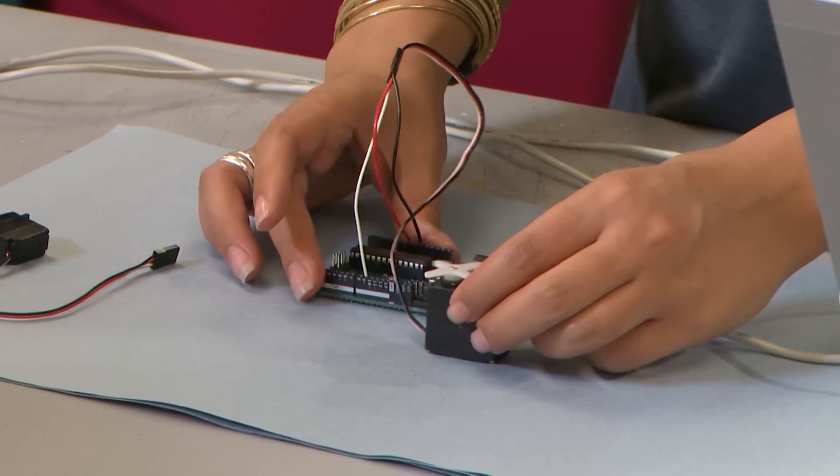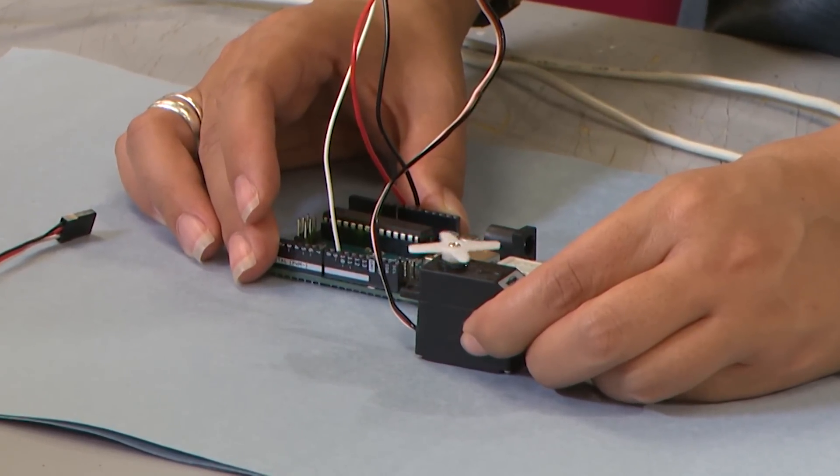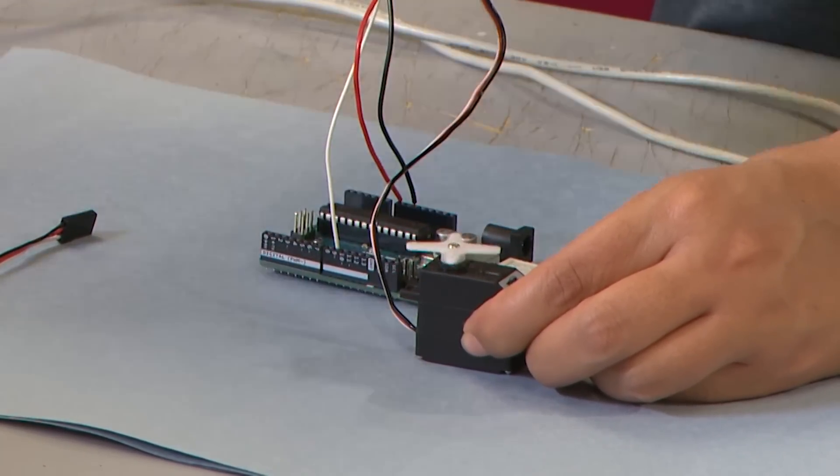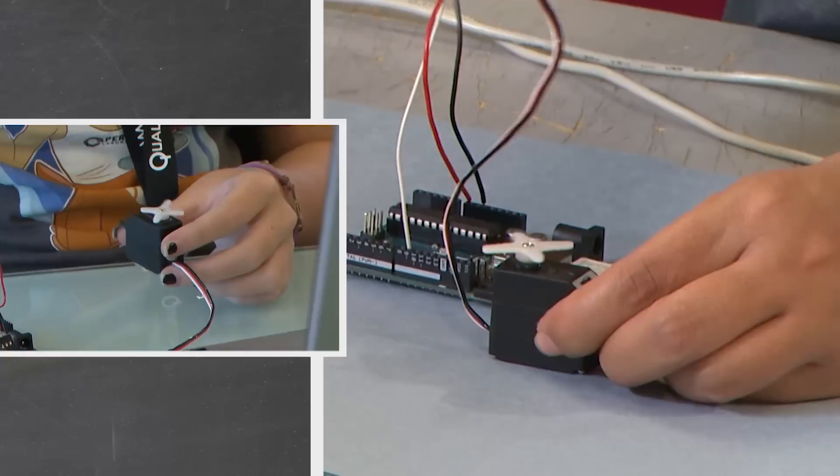Then notice this servo spins to the left, and then to the right, and then to the left. It's fully rotating. That's something only a continuous servo can do.